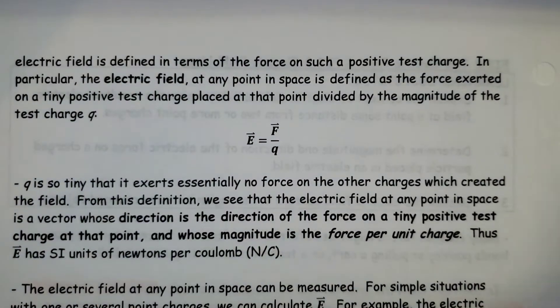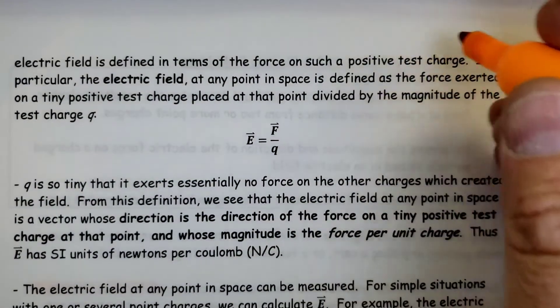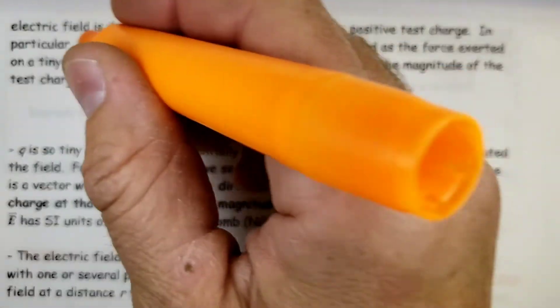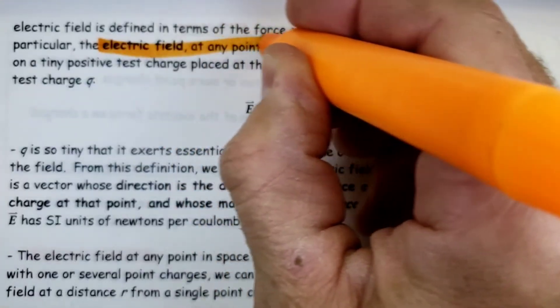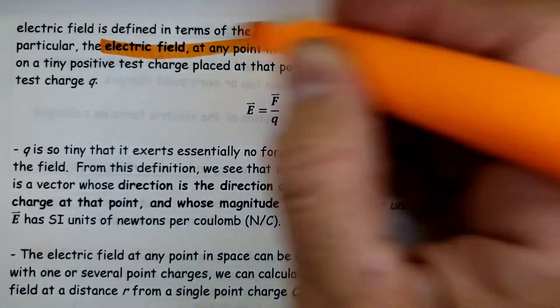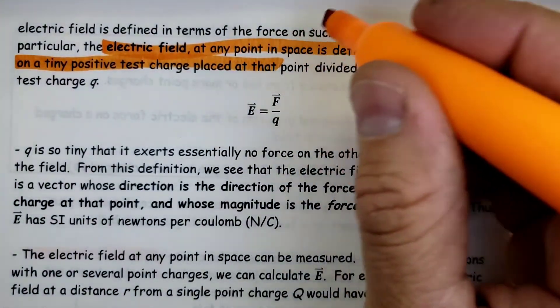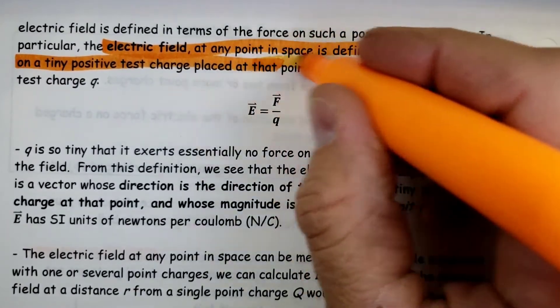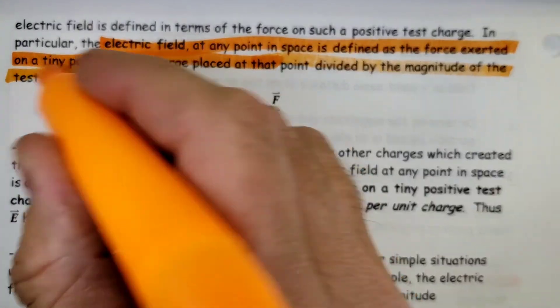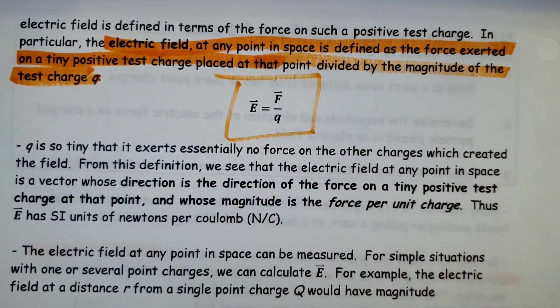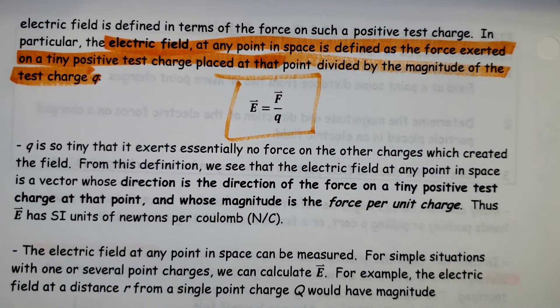The electric field is defined in terms of the force on a positive test charge. In particular, the electric field at any point in space is defined as the force exerted on that positive test charge at that point divided by the size of that test charge. So right there, we have E equals F over Q.